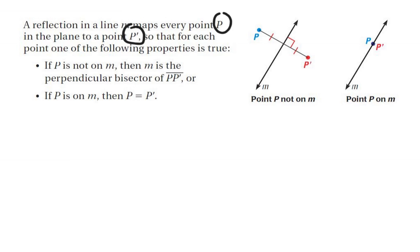Those distances have to be congruent distances. And the line segment between them has to be perpendicular. Unless point P is on the line itself, then its image and pre-image point are the exact same point.